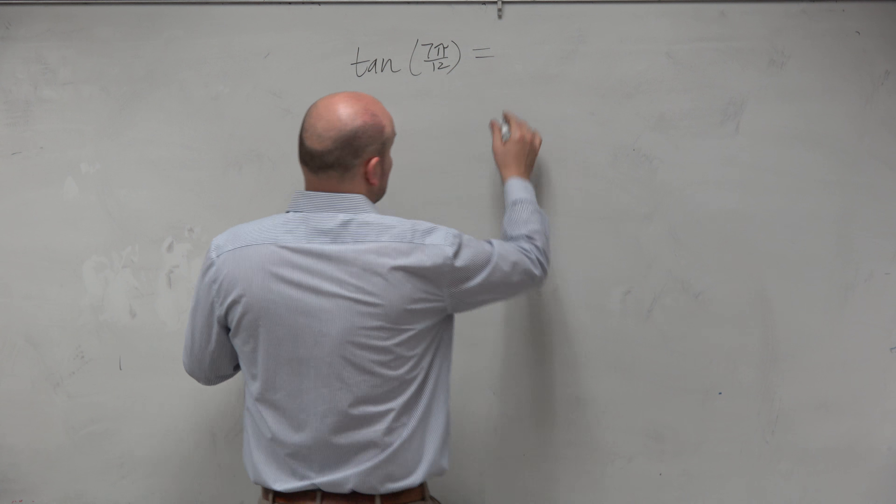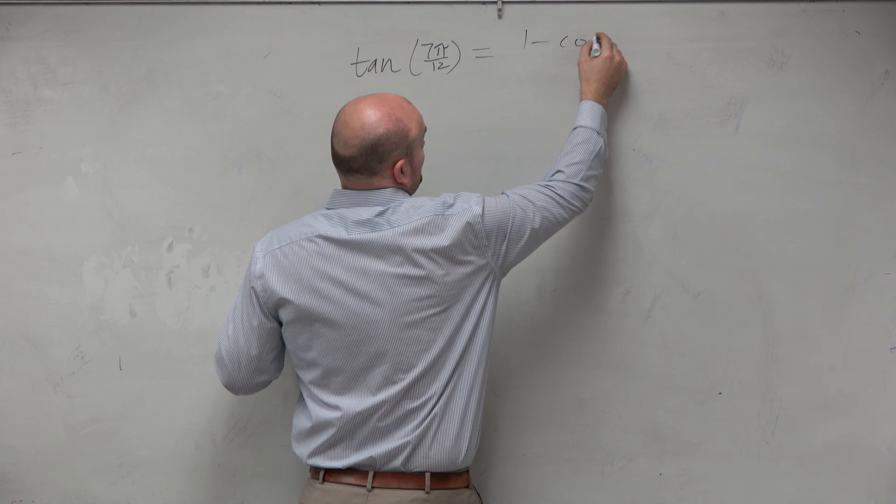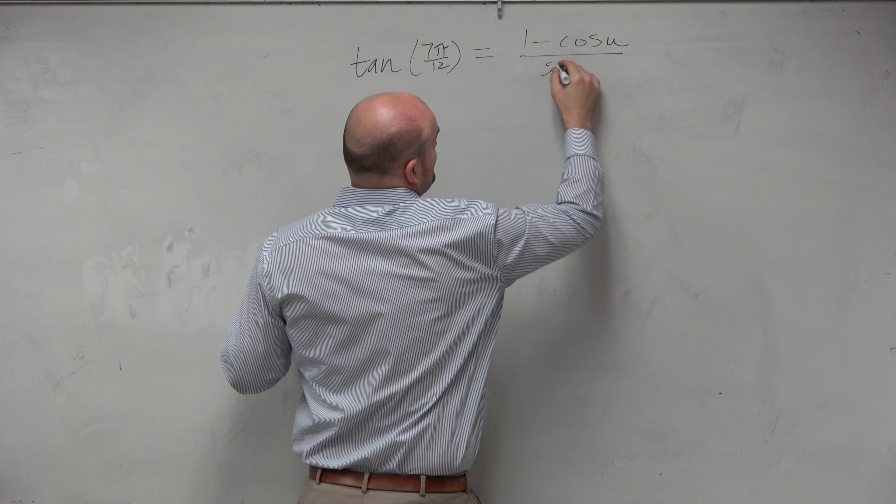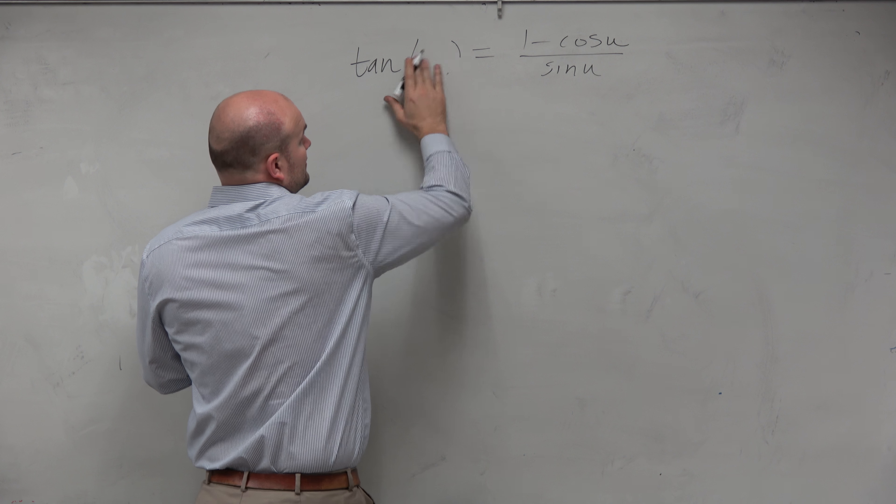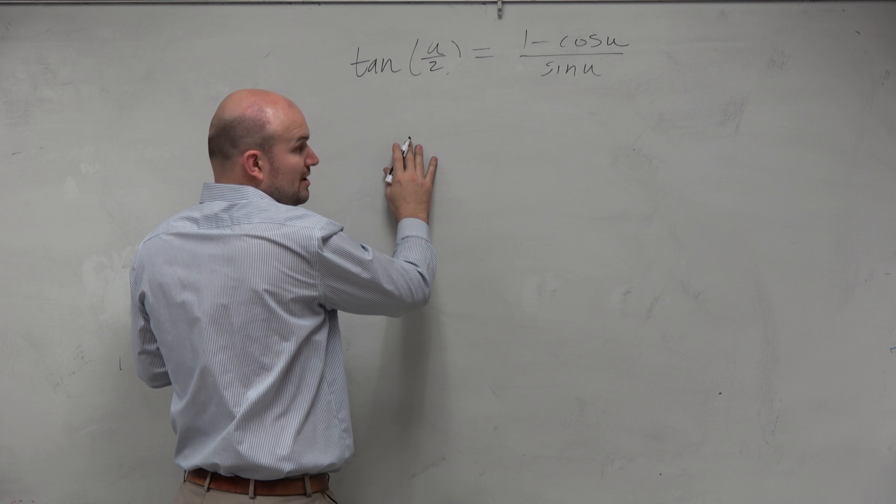So the tangent formula in this case is going to be (1 - cos u) / sin u. But again, we're looking for u, where this represents u divided by 2, right?